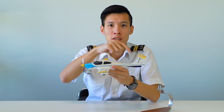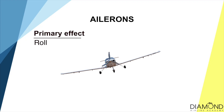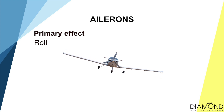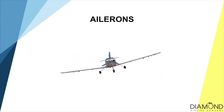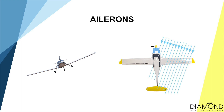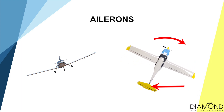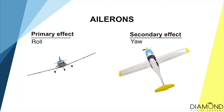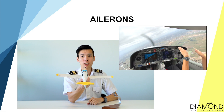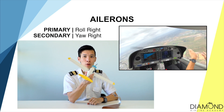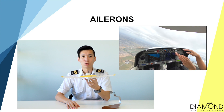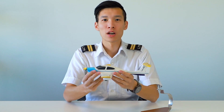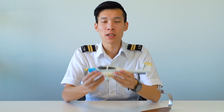Last but not least, the longitudinal axis. The primary effect of the aileron is roll, and there is a secondary effect as well. When an aircraft is rolling and turning, the air will no longer be coming straight ahead. The oncoming air will impact the tail at an angle, creating a force that pushes the tail laterally, which yaws the airplane towards the direction of the turn. That's why the secondary effect of ailerons is yaw. Applying right ailerons will roll to the right, followed by yaw to the right. Applying left ailerons will roll to the left, followed by yaw to the left.